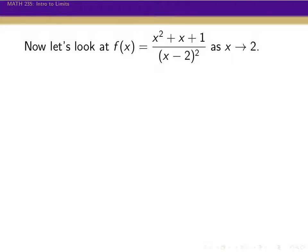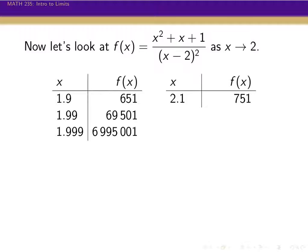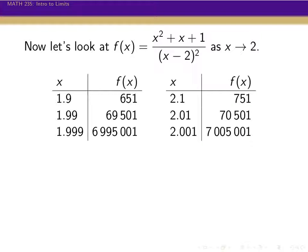So let's do the same thing we did before and plug in values to see what happens. If I plug in 1.9, the value of the function is 651. If I do 1.99, it's over 69,000. If we do 1.999, all of a sudden we're almost at 7 million. What about values a little bit bigger than 2? Well, 2.1 gives 751. 2.01 is over 70,000. And 2.001 is over 7 million.